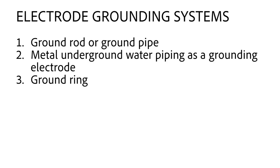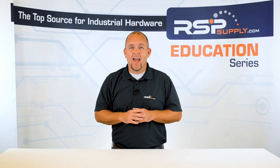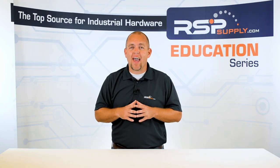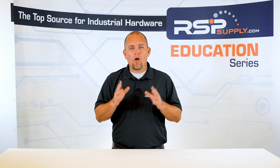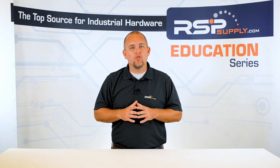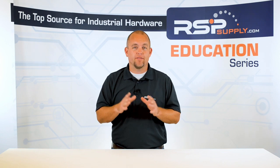Next is the ground ring, which we discussed in our last video. A ground ring is simply a conductive material such as copper that surrounds any given structure. It is required that the wire used be no smaller than two gauge wire and that the wire is buried at least two and a half feet below the surface. There are other grounding techniques that can be used with this method to increase its overall effectiveness.